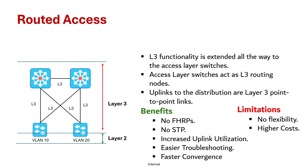So when should you consider using routed access? I would say in scenarios where you need to maximize uplink utilization, where you are expecting a higher bandwidth environment, where your team prefers using Layer 3 tools for diagnostics, or where rapid convergence is required and downtime must be minimized. However, if you need VLANs that span across multiple switches or have strict budget constraints, a traditional Layer 2 access layer might be a better choice.